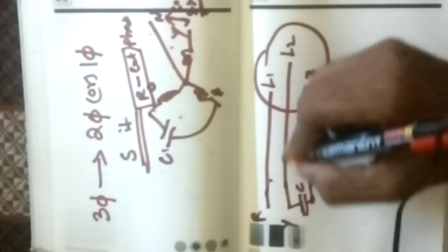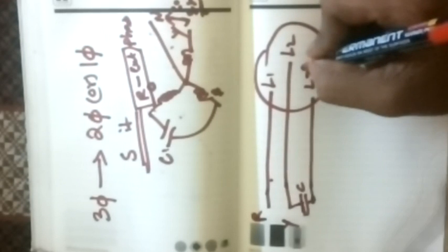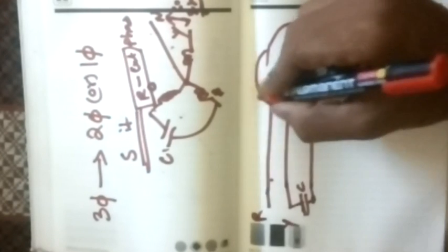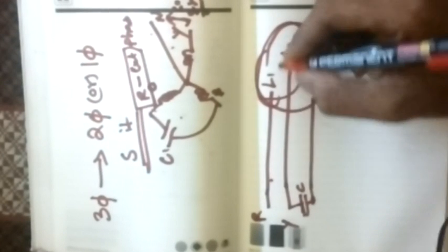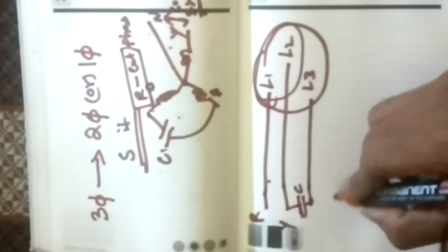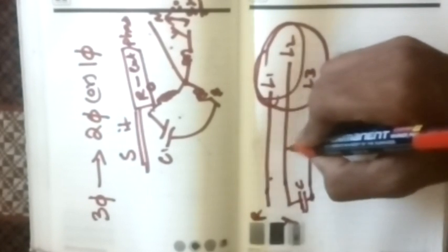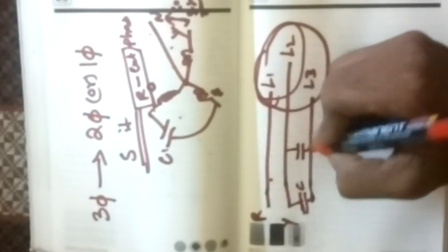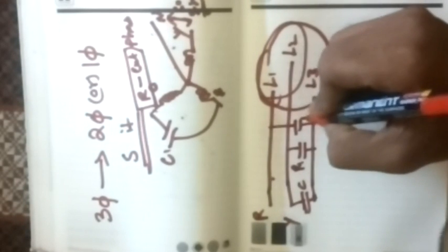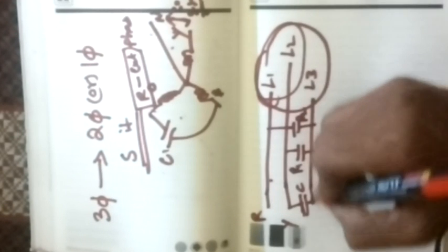Now, in this case motor winding will be failing by two-phase running. So, we use some another special arrangement. What is that? That is running capacitor. We use running capacitor R1 and R2.